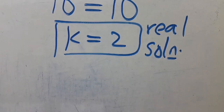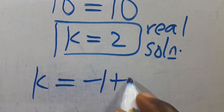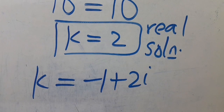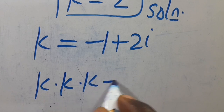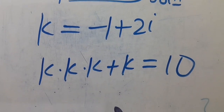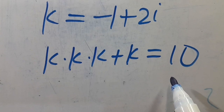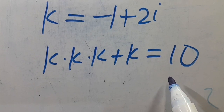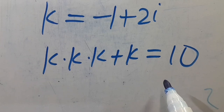Also, when k equals minus 1 plus 2i, it will also satisfy k multiplied by k multiplied by k plus k equals 10 — you can verify this yourself. If you find this video interesting, don't forget to share, like, comment, and subscribe to our YouTube channel for more maths tutorial videos. Bye-bye!